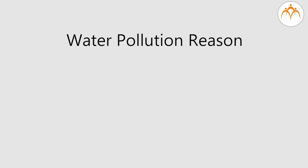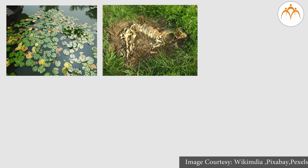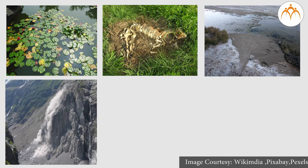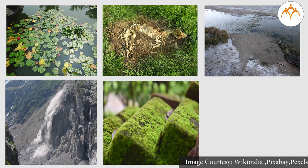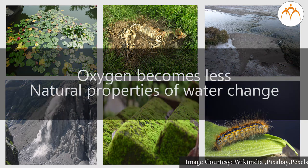There are a lot of reasons for water to get polluted. Some are natural and some are manmade. In natural factors, growing water hyacinth, perishable items, waste, fungus, moss, and worms are included. The effect of this is that oxygen becomes less and the natural properties of water change.